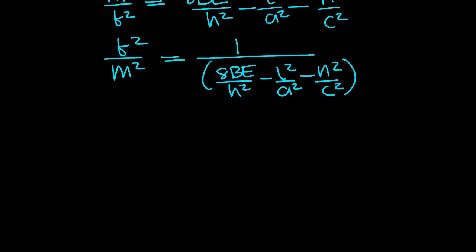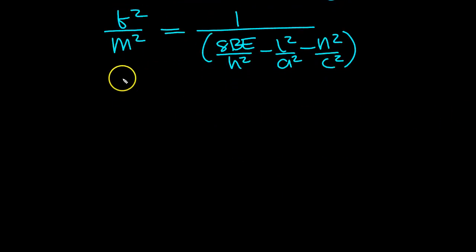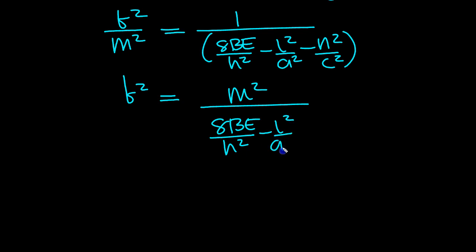And we've got B squared. So let's turn our attention to that then. So B squared equals the M squared moves from divide to times, all over 8BE over H squared minus L squared over A squared minus N squared over C squared. There we go, that's B squared.